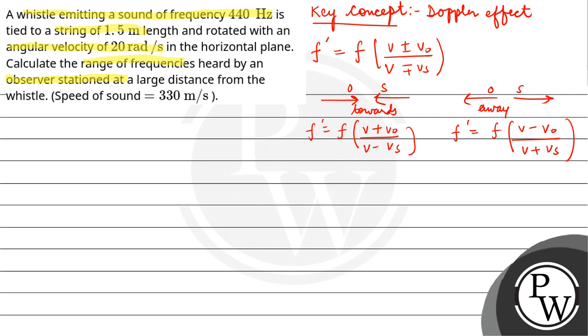So in the question you're given angular velocity ω = 20 radian per second, and radius is given to you, which is the string length, that will be the radius: 1.5 meter.